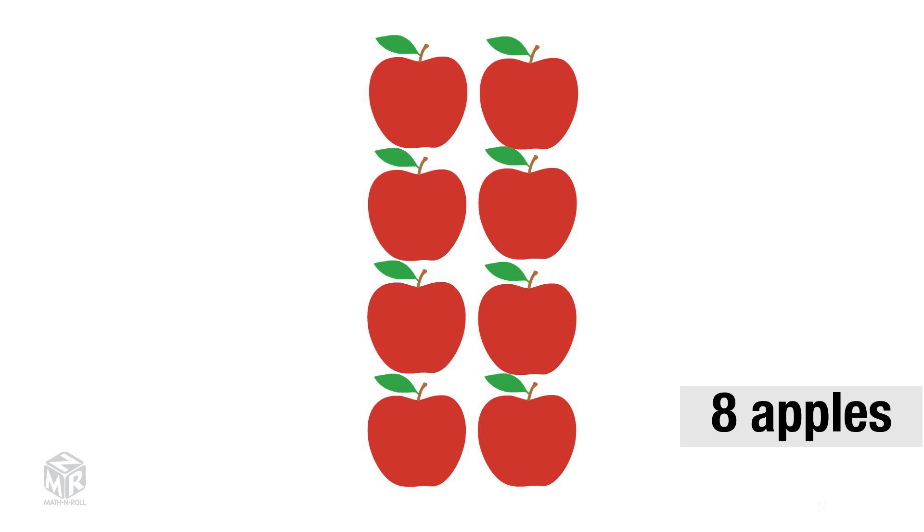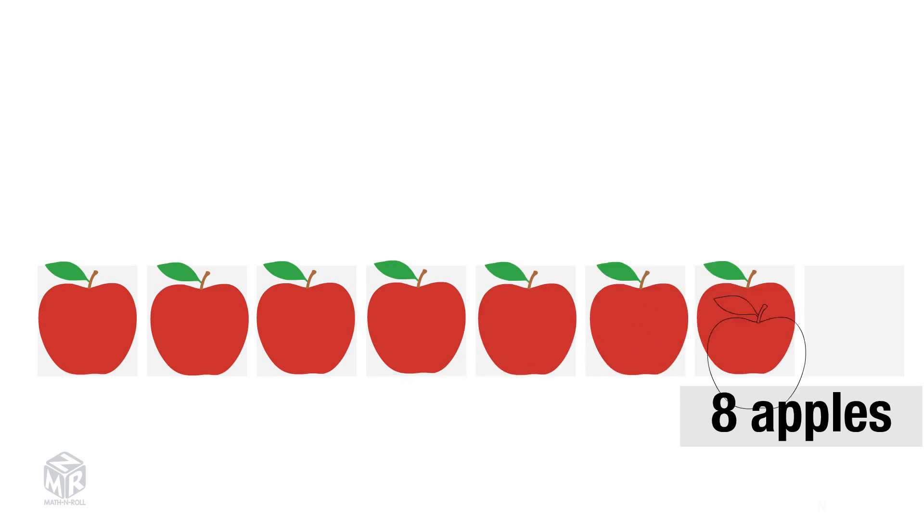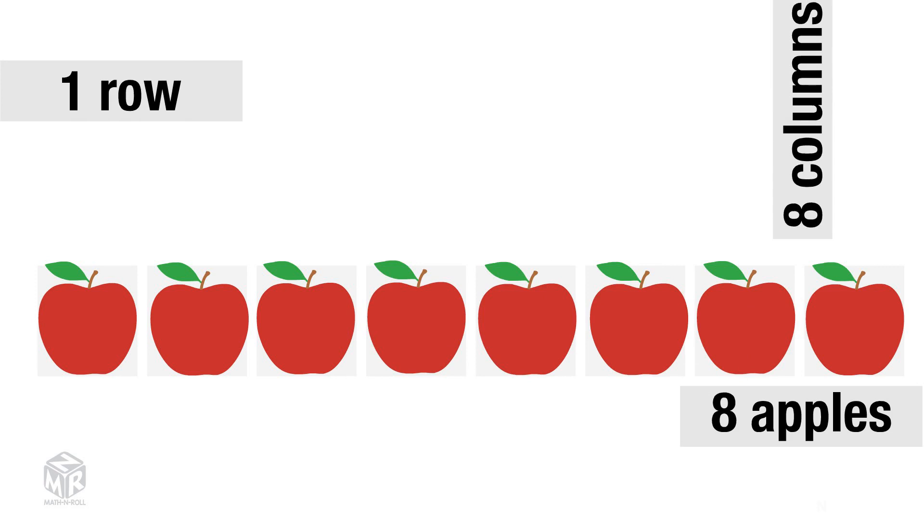We can also rearrange our apples into 1 row. This time, we have 1 row and 8 columns. Our multiplication sentence is 1 times 8, which equals 8.